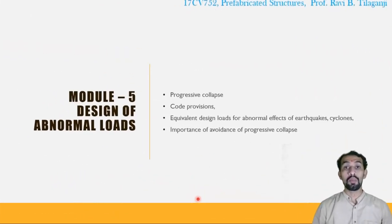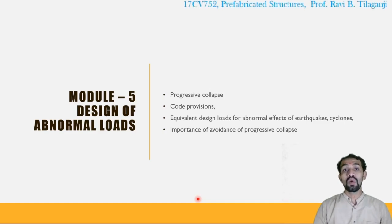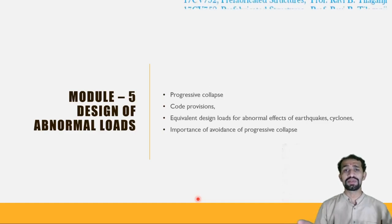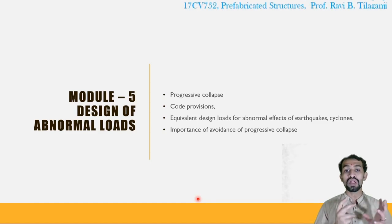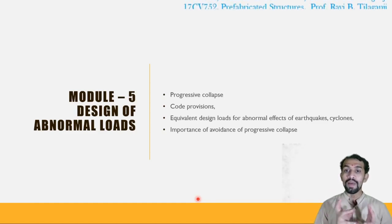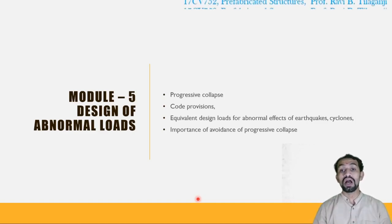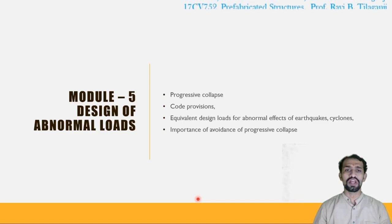Module 5, progressive collapse. So design for abnormal load sequence. What is progressive collapse? Sudden collapse. Why? What code provisions are provided? Equivalent design loads for abnormal effects of earthquake. Cyclones. Important and avoidance of progressive collapse.